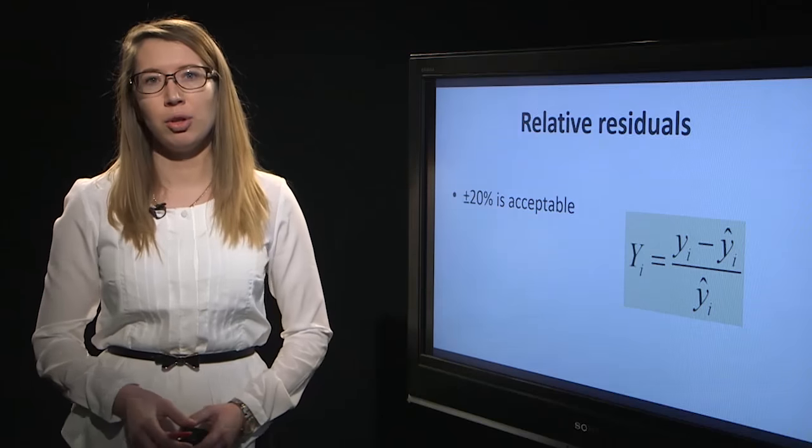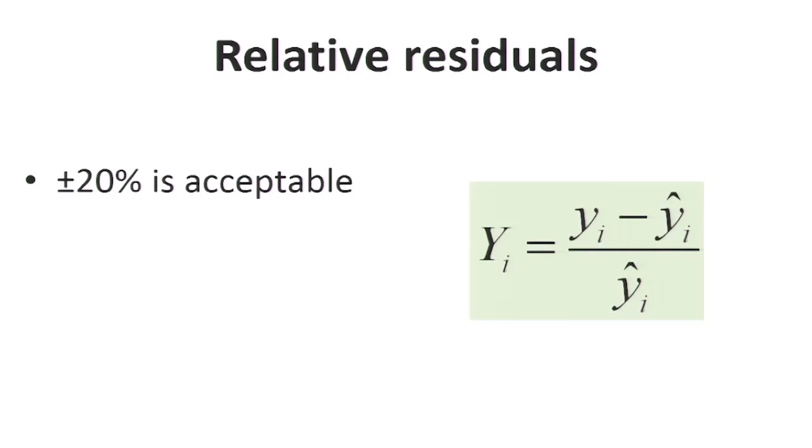In addition to the plot of residuals, Sanco guidelines also suggest using relative residuals, which we obtain when we divide the residuals with the calculated signal value. And the relative residuals should be within ±20% for the calibration model to be acceptable.